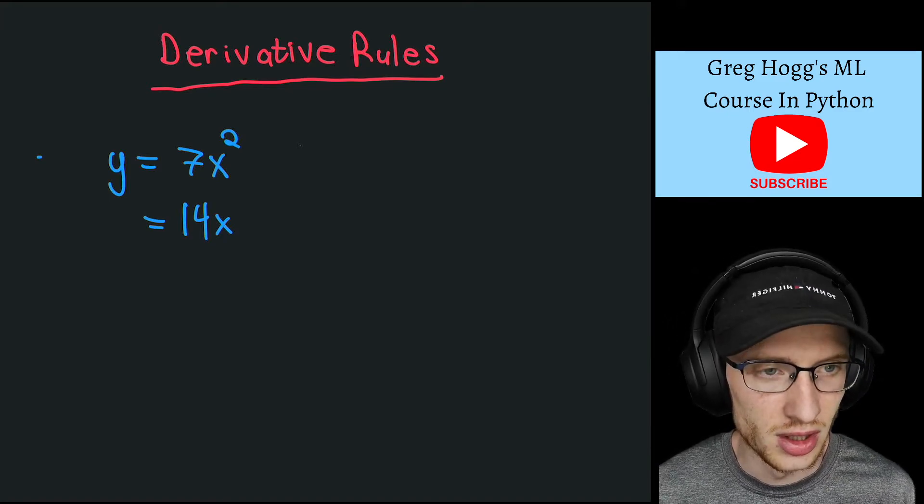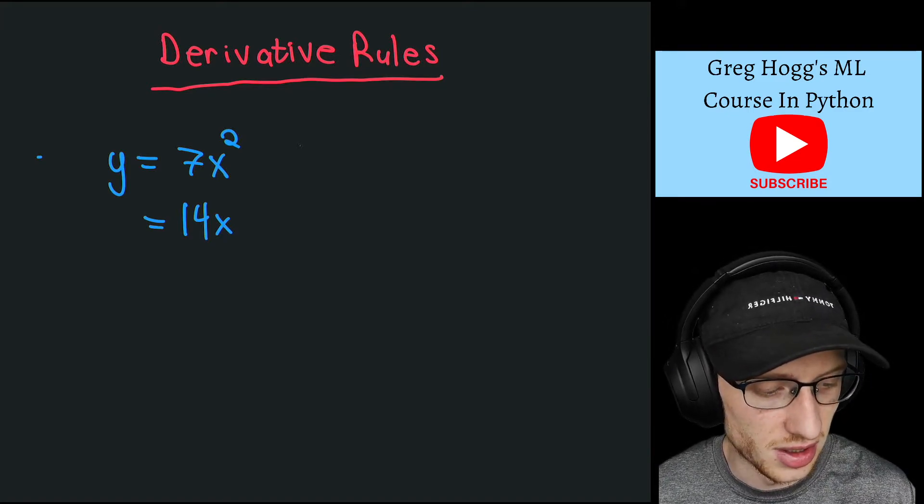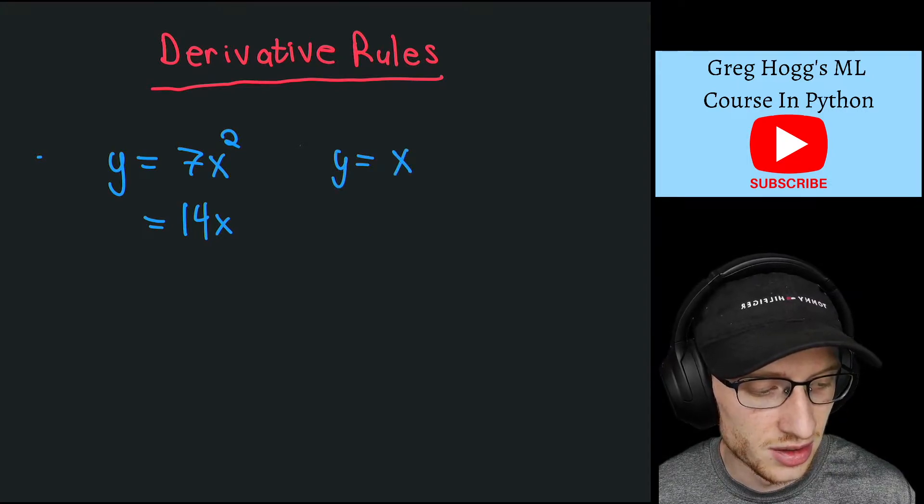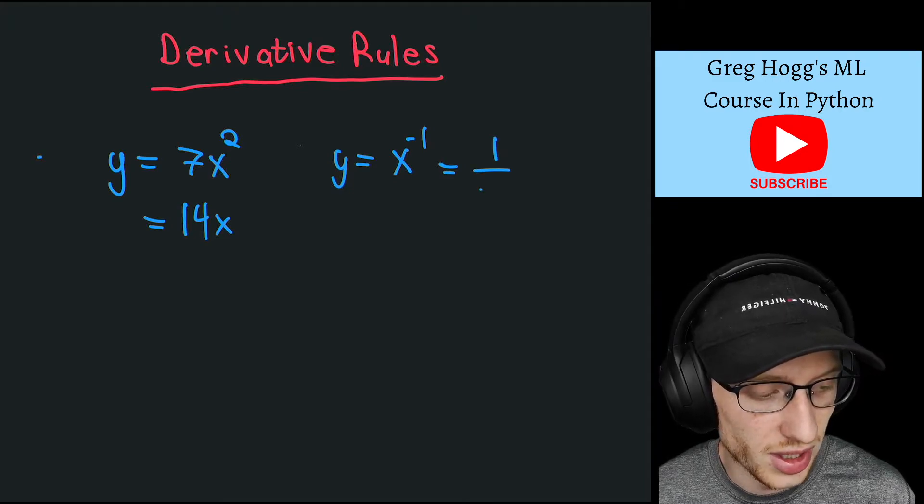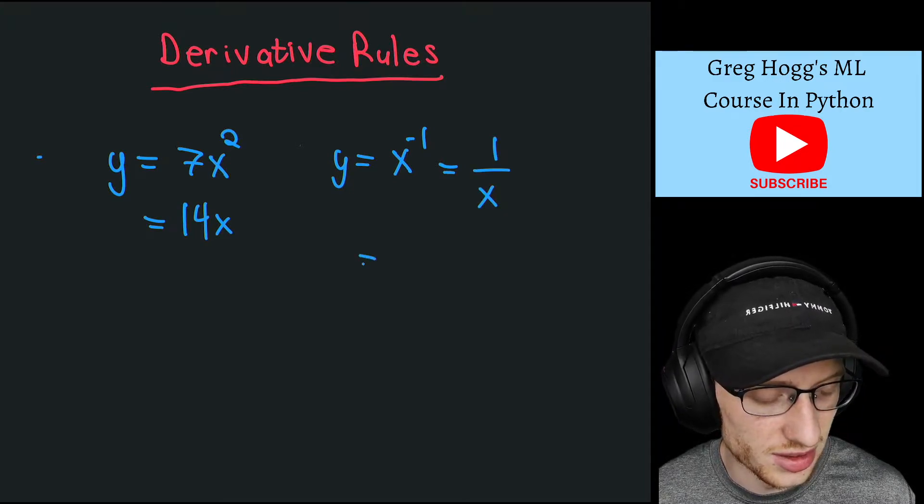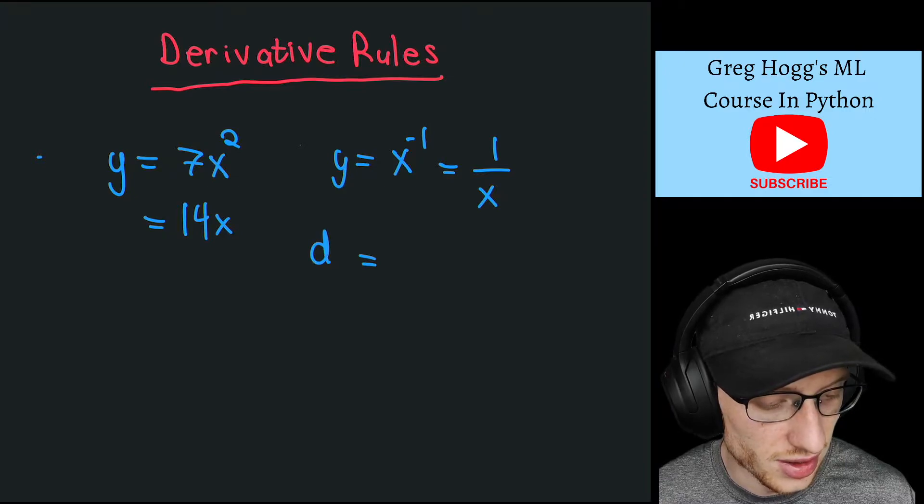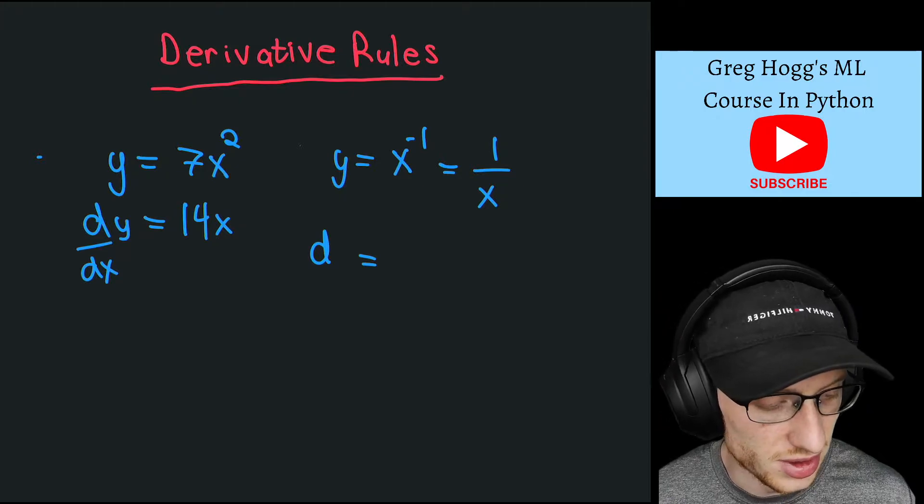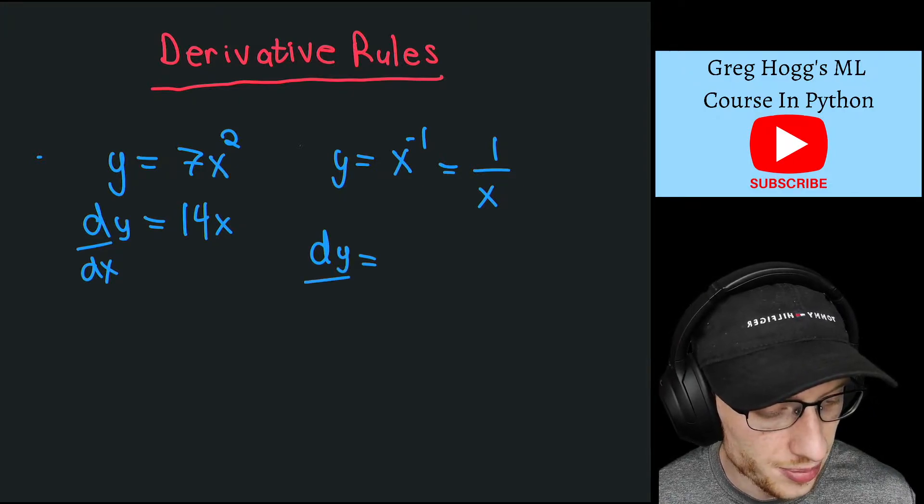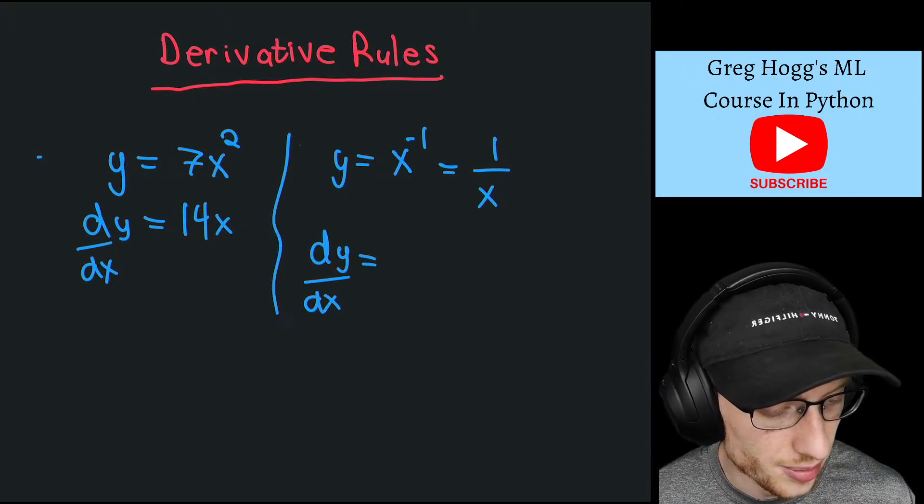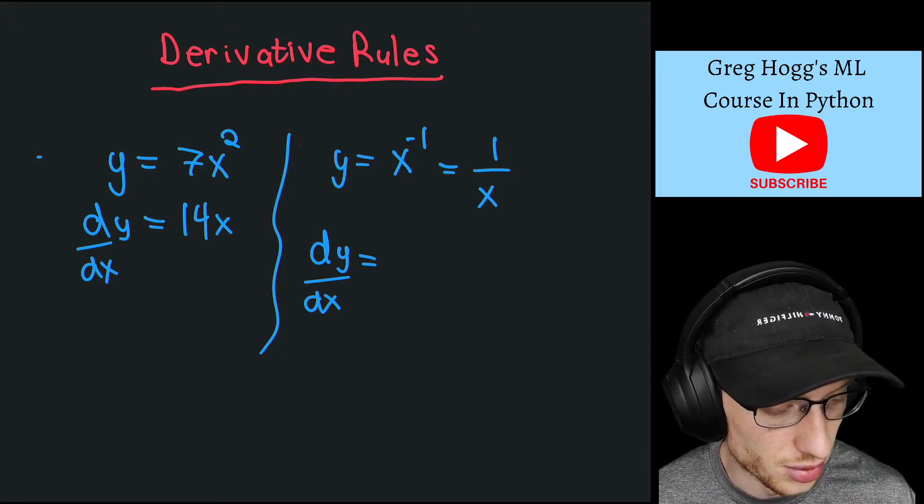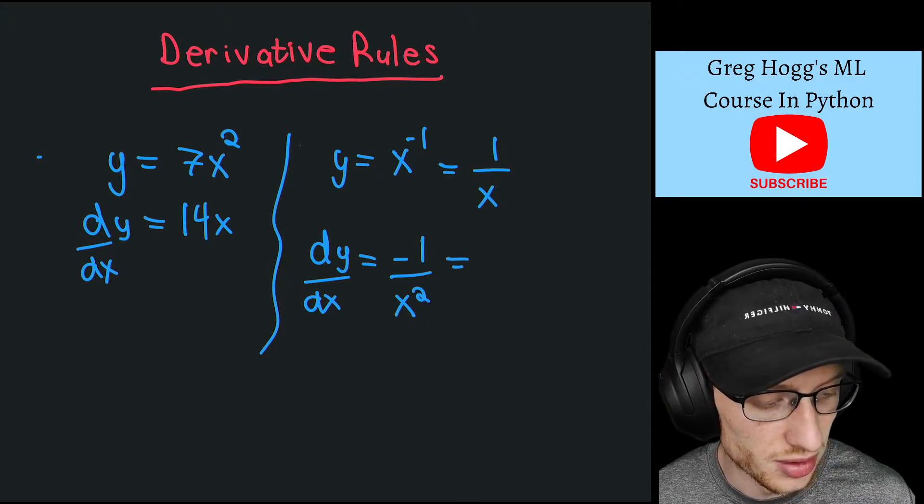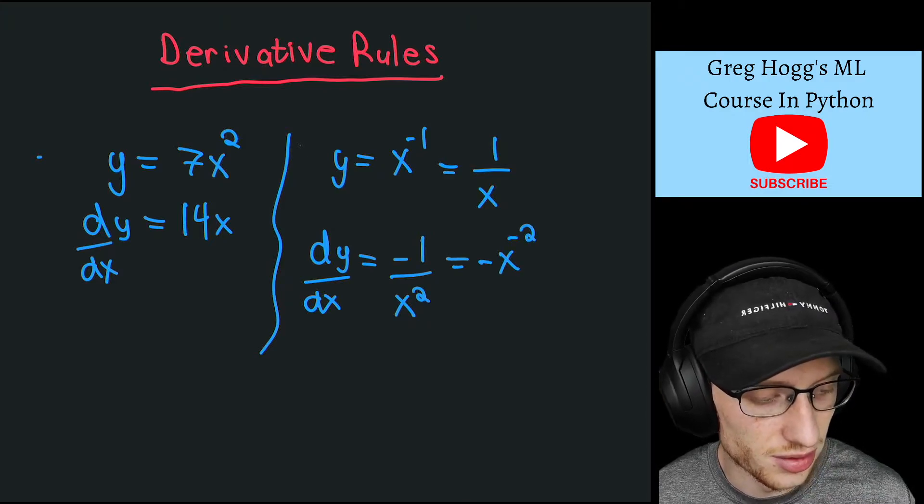Or if you asked for the derivative of y = x^(-1), which is the same as 1/x, I could tell you that dy/dx equals -1/x², or equivalently, -x^(-2). And I should clarify: for the previous example, dy/dx of 7x² equals 14x.